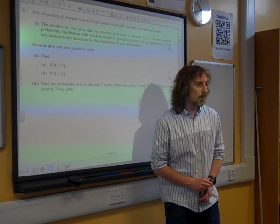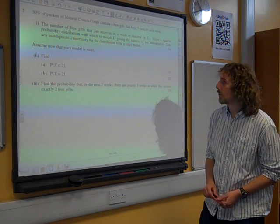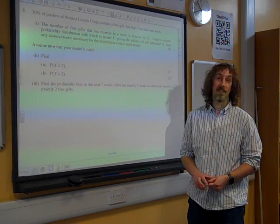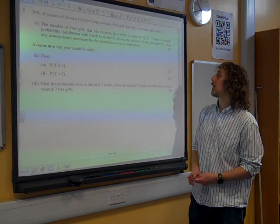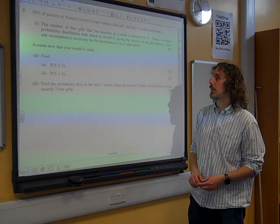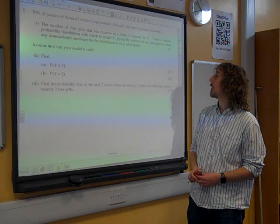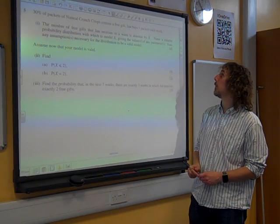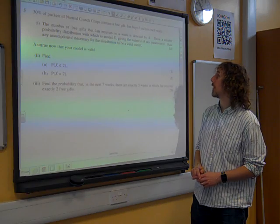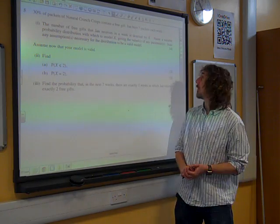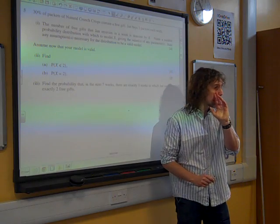Okay, 30% of packets of natural crunch crisps contain a free gift. Jan buys five packets each week. The number of free gifts that Jan receives in a week is denoted by X. Name a suitable probability distribution with which to model X, giving the values of any parameters, and state any assumptions necessary for the distribution to be a valid model. We're giving four marks for this.